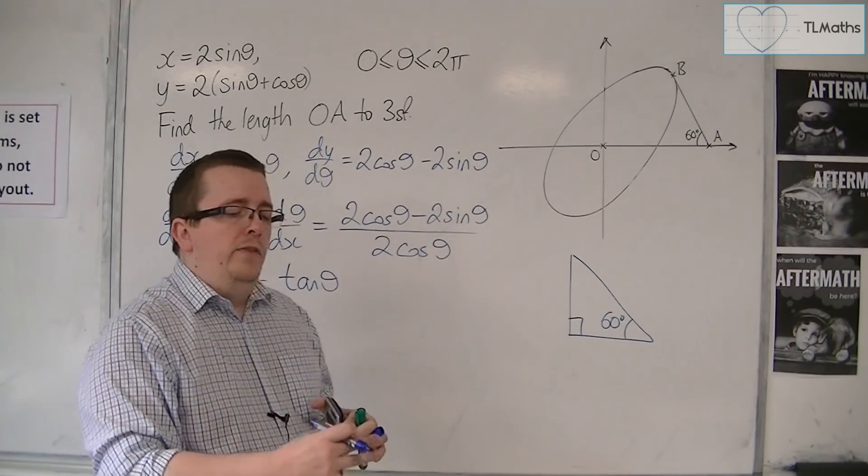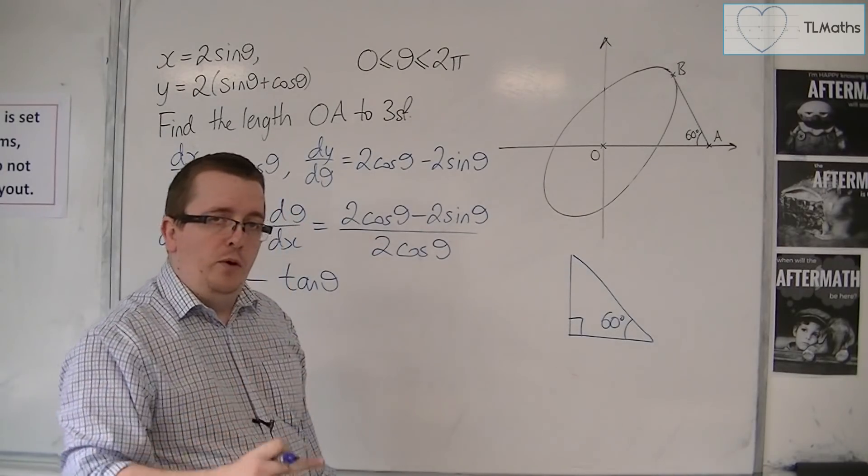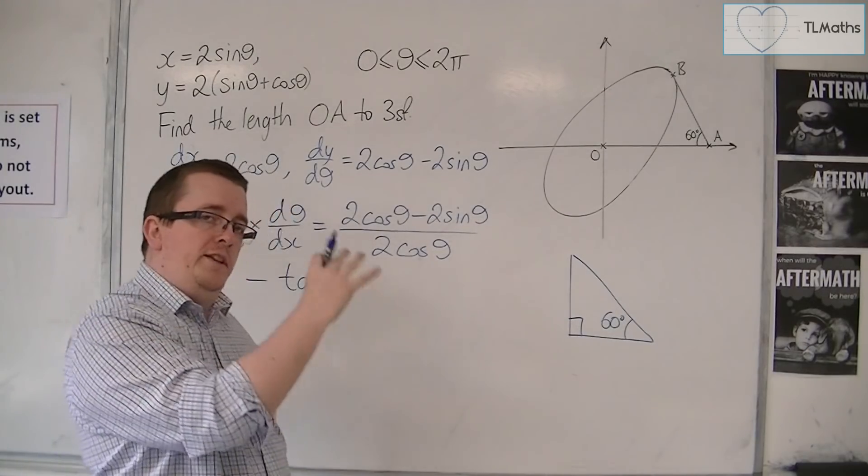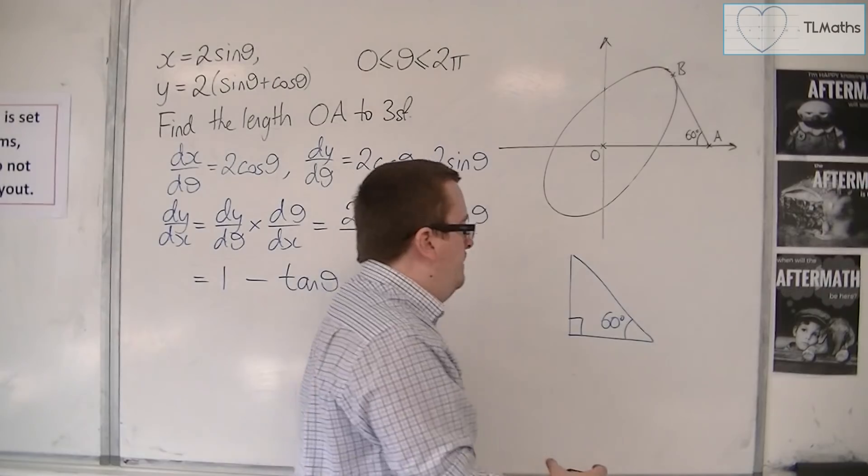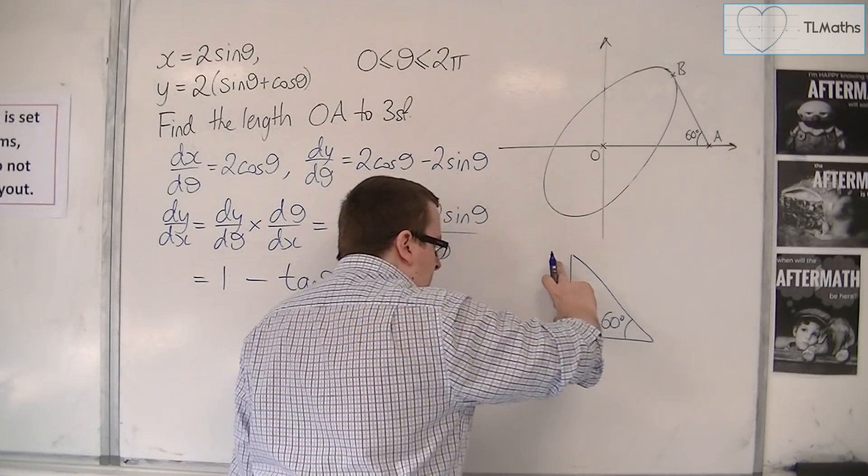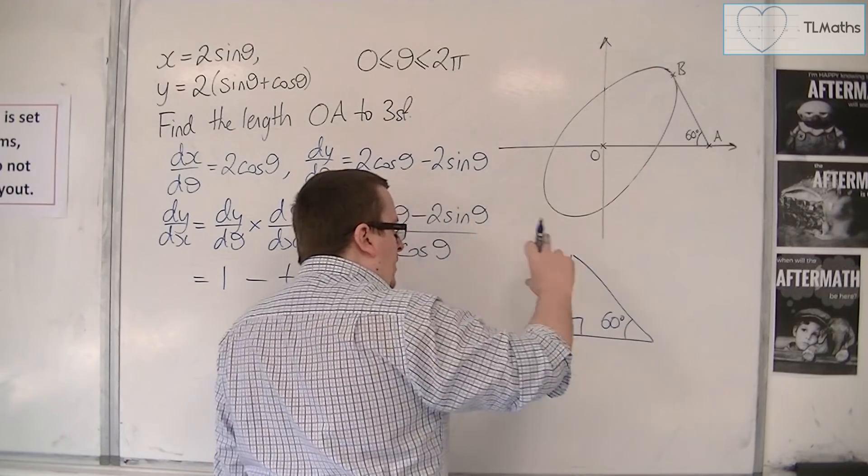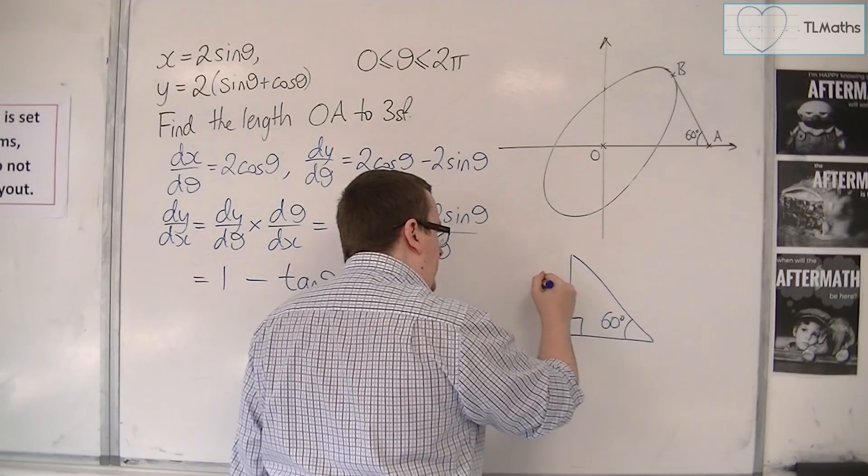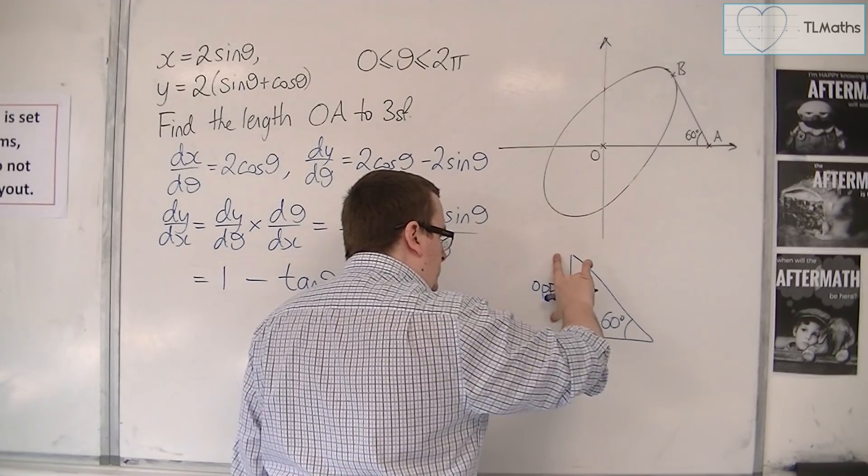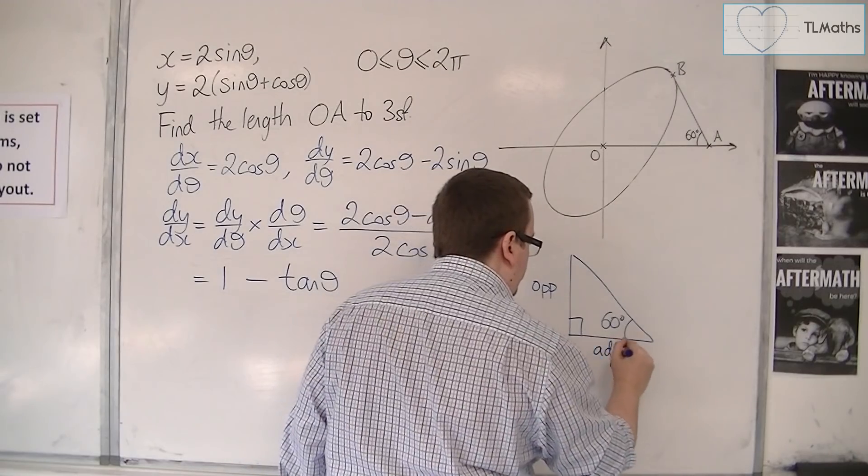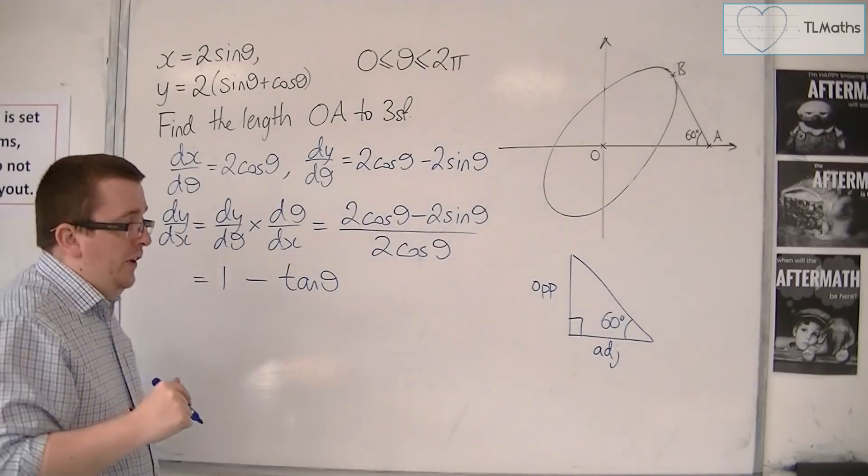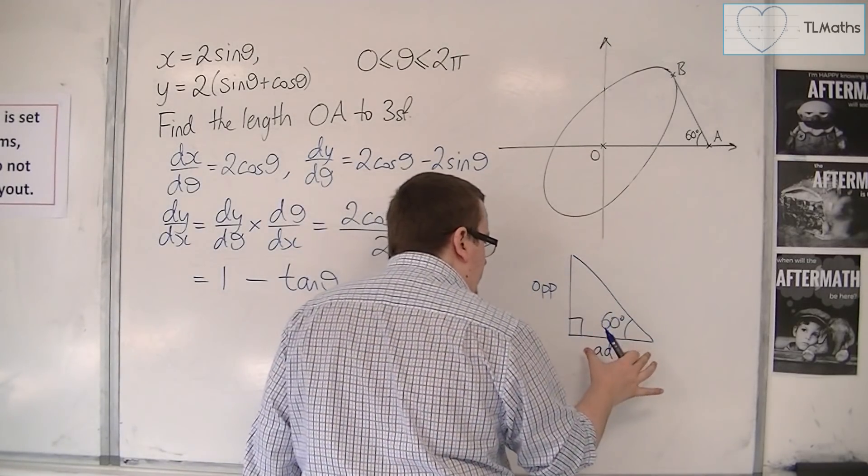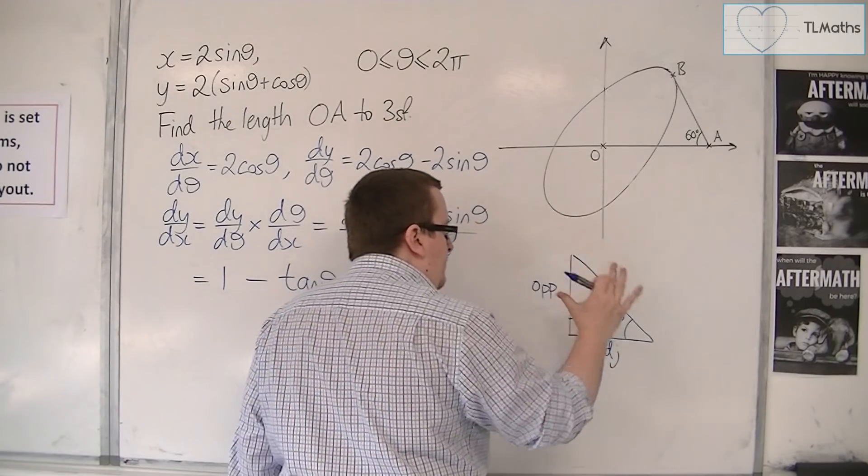We know that the gradient between two points is dy by dx, the difference in the y coordinates divided by the difference in the x coordinates. If I'm thinking of this as a right angle triangle, this side is the opposite to the angle, and that is the adjacent.